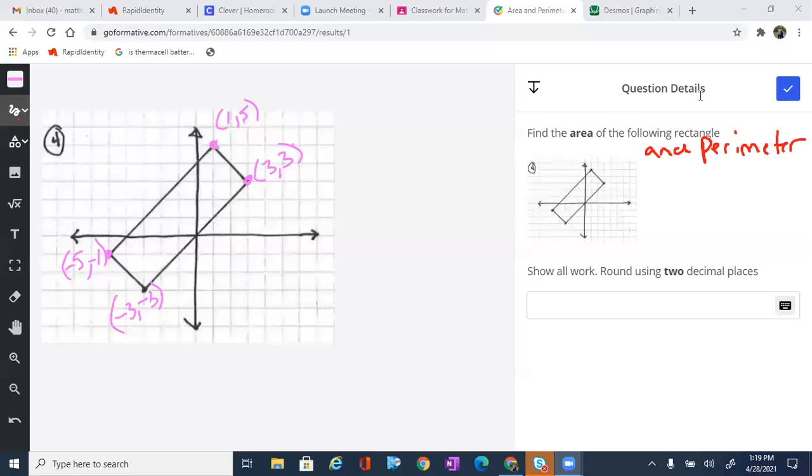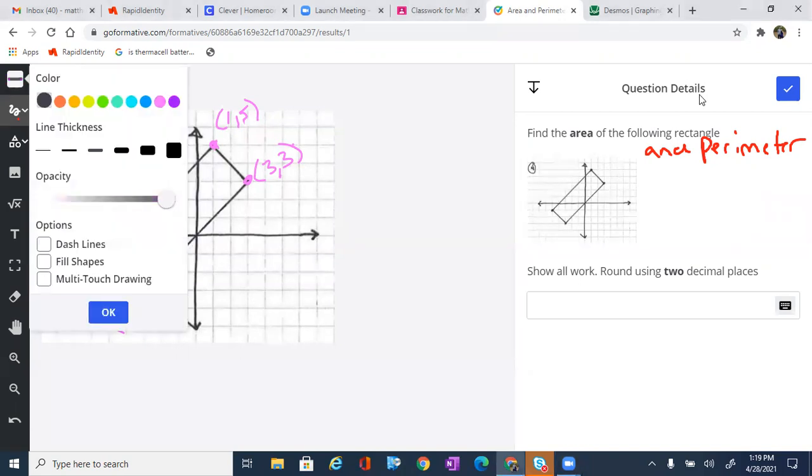All right, so we're going to find the area and perimeter of this rectangle on the coordinate grid. In order to do so, we are going to start with the distance formula by writing that down.